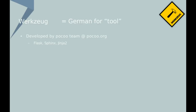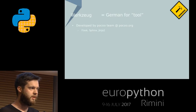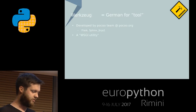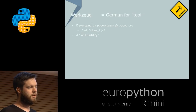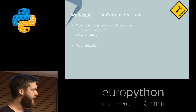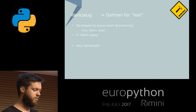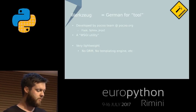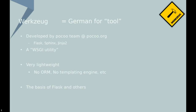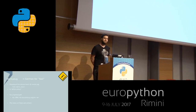Werkzeug is developed by the Pocoo team. If you were here on Monday, Armin Ronacher is a famous member of that team. Other products include Flask, Sphinx, Jinja2 the templating engine, and more. The documentation calls it a WSGI utility — specifically not called a framework because it's intentionally left very lightweight. It's basically a toolbox for web applications and not more. It leaves you very much freedom to use whatever things you want to plug on top of it or leave them out. It has no ORM, no templating engine, none of these things that most frameworks would bring with them. And it's the basis of Flask — if you have ever worked with Flask, you have actually also worked with Werkzeug.